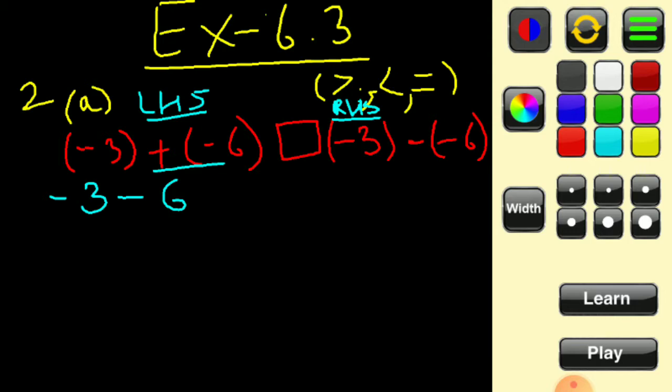Both integers are negative, so they are going in the same direction. They will add up because they are going in the same direction, so you add 3 and 6 to get 9, but the direction is minus, so the result is minus 9.